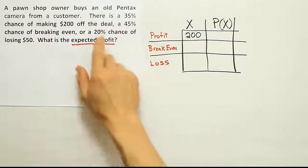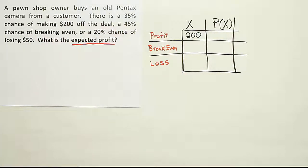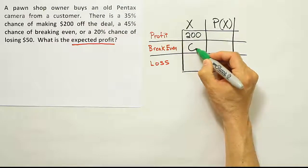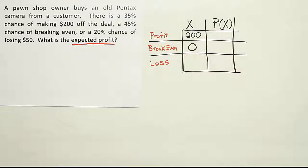Next, it says 45% chance of breaking even. Now, if he breaks even, it means he doesn't make anything on the deal, but he also doesn't lose anything. So his total net gain is zero. Basically, he sells the camera for what he paid for.